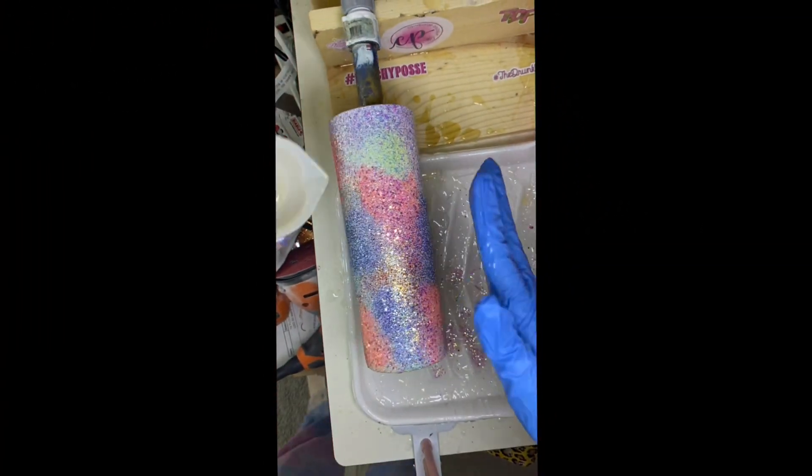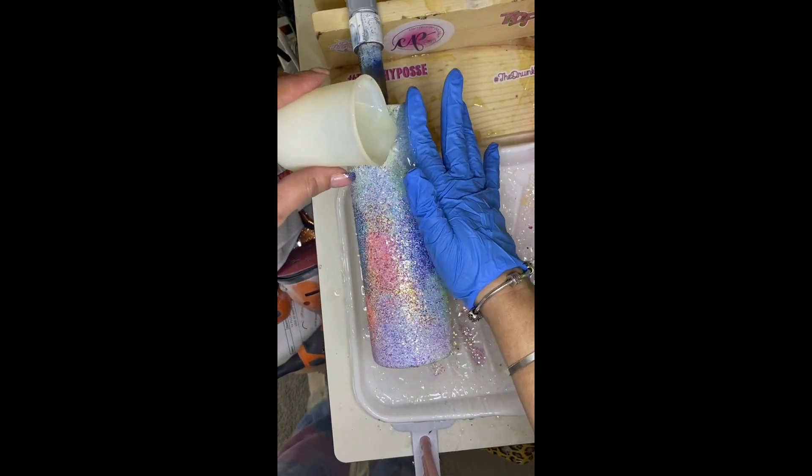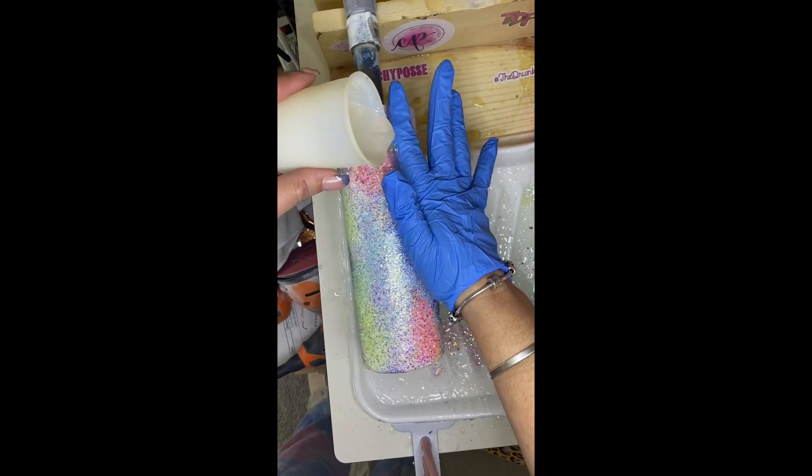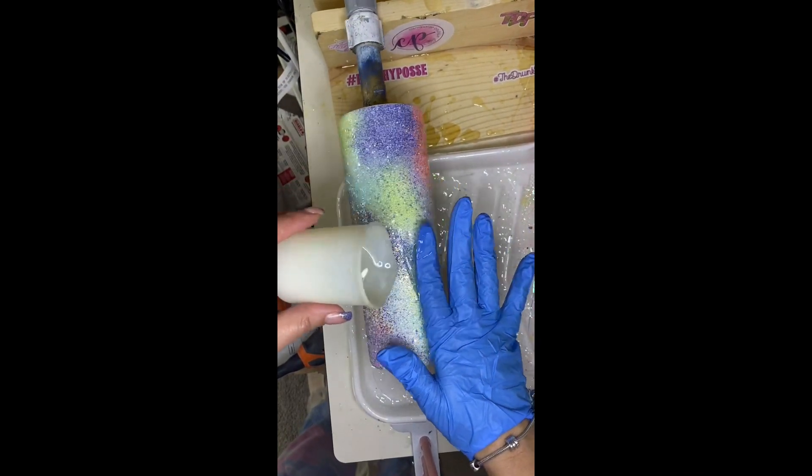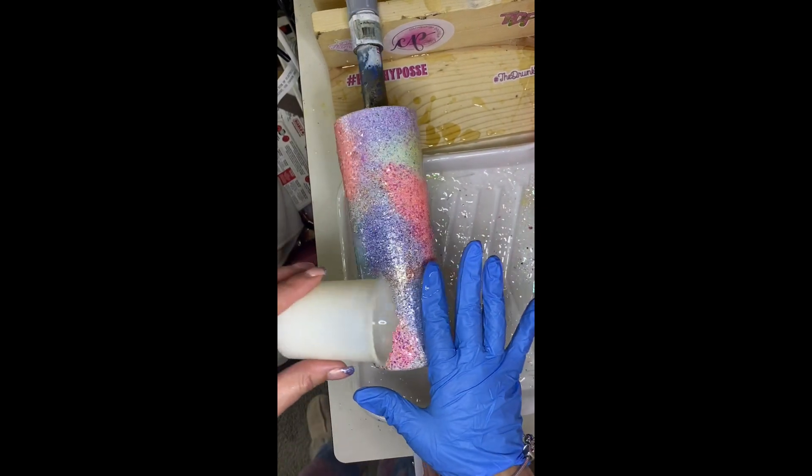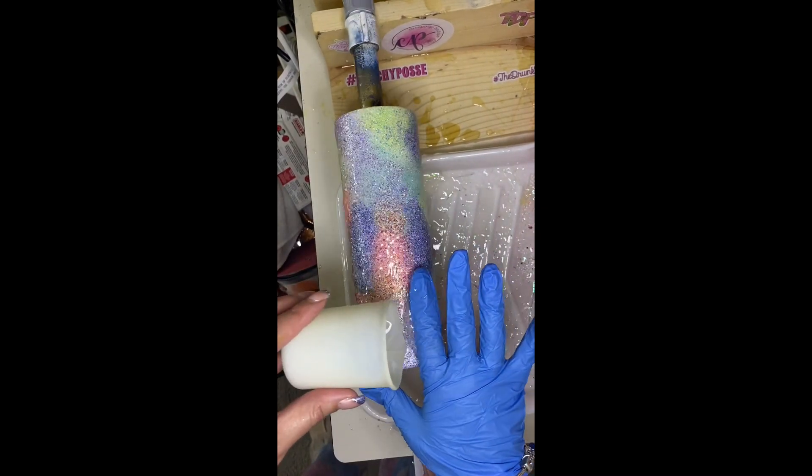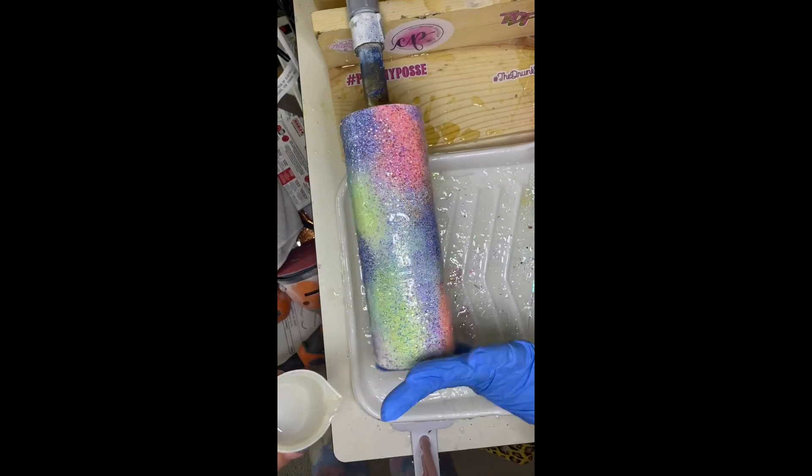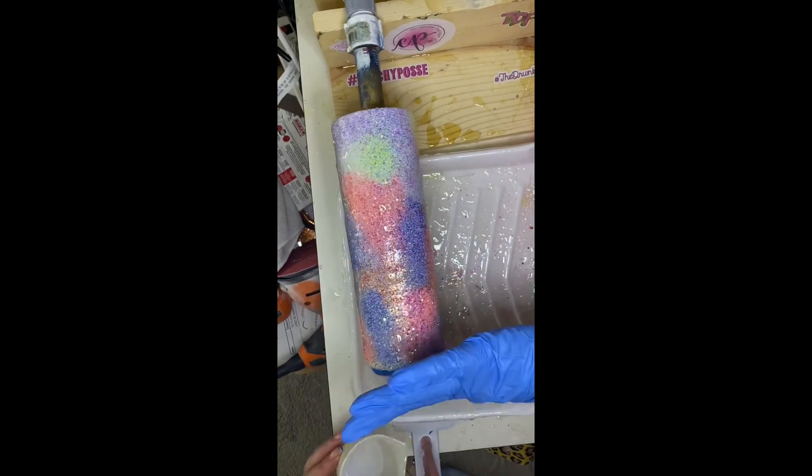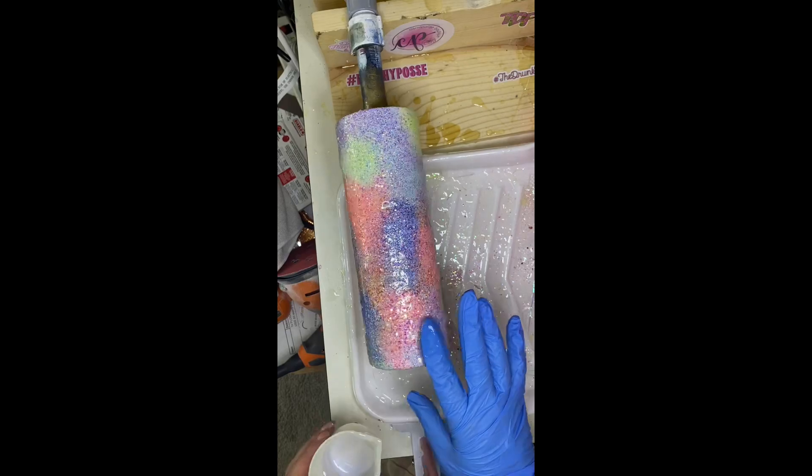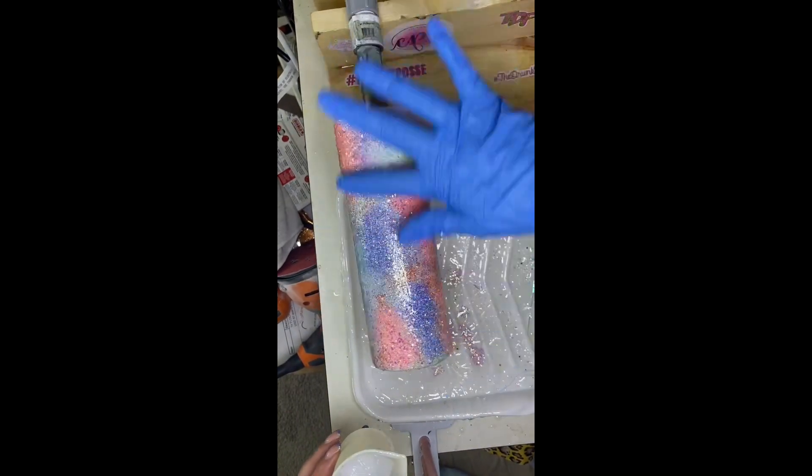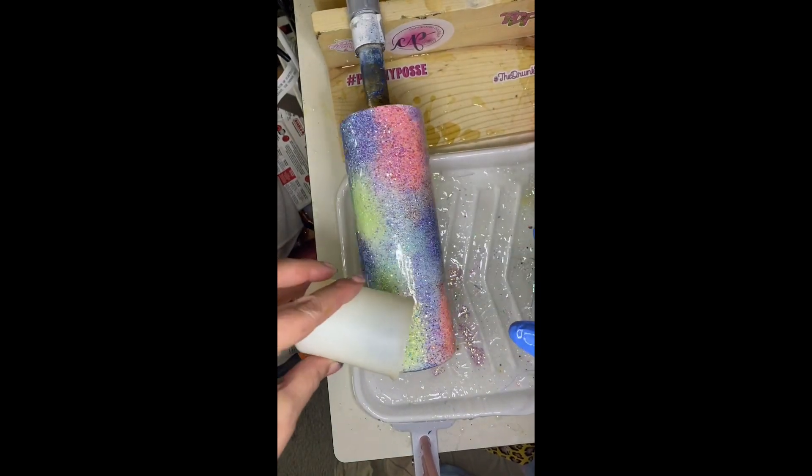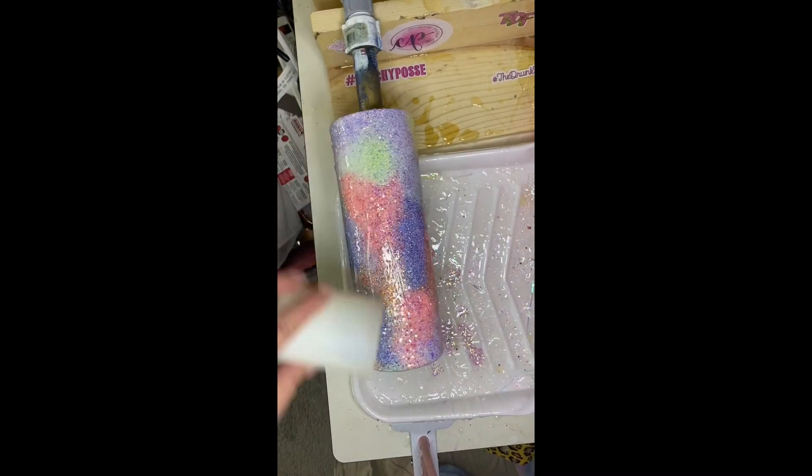From there we are going to go in with two coats of epoxy. I am using 25 milliliters for both coats on this 20 ounce hydro flask. I am going to make sure that I am spreading it on nice and even and making sure that I get good coverage all over the tumbler up at the top rim, the bottom rim, and then of course the bottom itself.